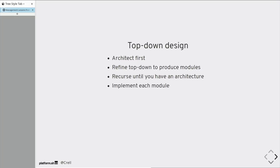And this requires, Brooks argues, top-down design. Architect your system first. And then refine it top-down to produce modules. Then, recurse that process, break each module down into sub-modules and sub-sub-modules, until you have a picture of how your system fits together, until you have an architecture. And then implement each module individually. Debug each one separately.